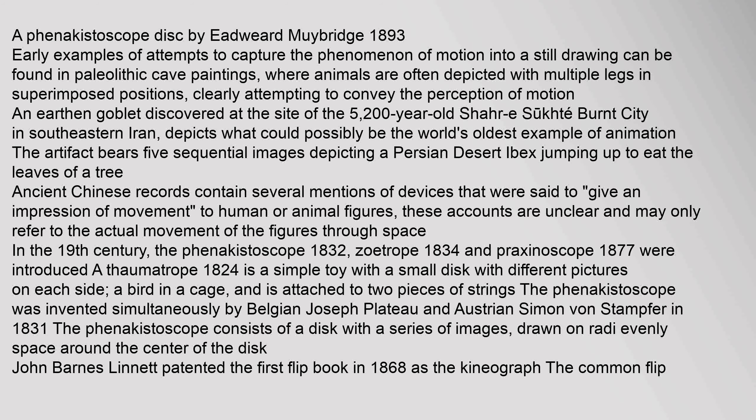In the 19th century, the Phenakistoscope (1832), Zoetrope (1834), and Praxinoscope (1877) were introduced, along with the thaumatrope (1824), a simple toy with a small disc with different pictures on each side. The Phenakistoscope was invented simultaneously by Belgian Joseph Plateau and Austrian Simon von Stamfer in 1831, consisting of a disc with a series of images drawn evenly spaced around the center. John Barnes-Linnett patented the first flip book in 1868 as the kineograph.